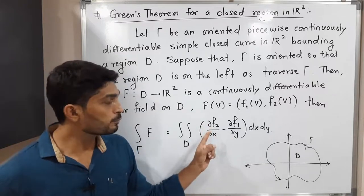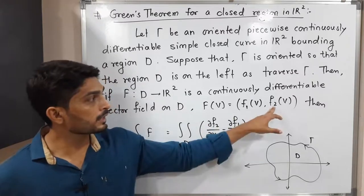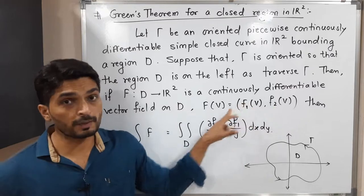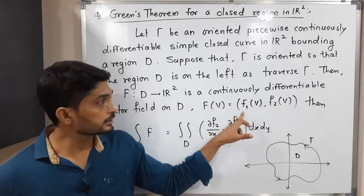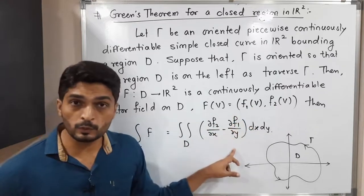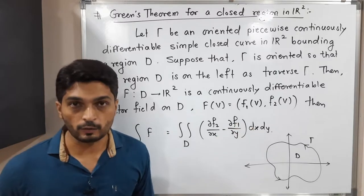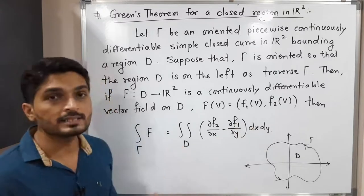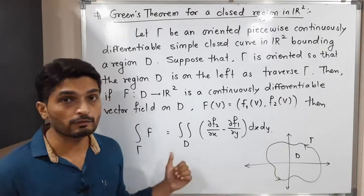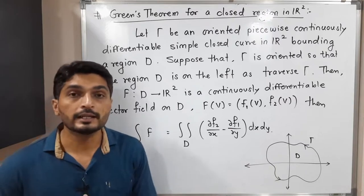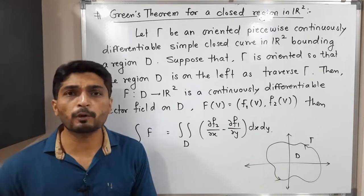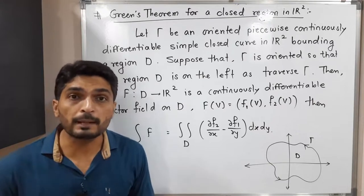Inside the integral we have ∂F₂/∂x, derivative of the second component of F with respect to x, minus derivative of the first component of F with respect to y, dx dy. Both have the same value: the line integral of F over gamma equals the value of that double integration.